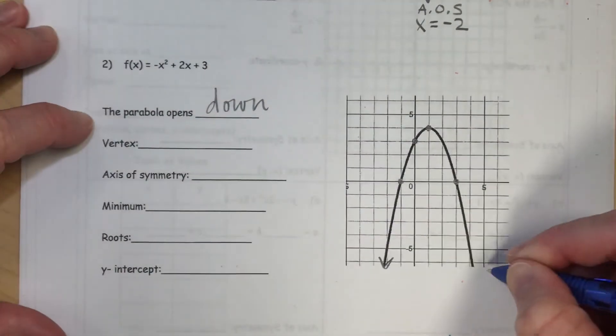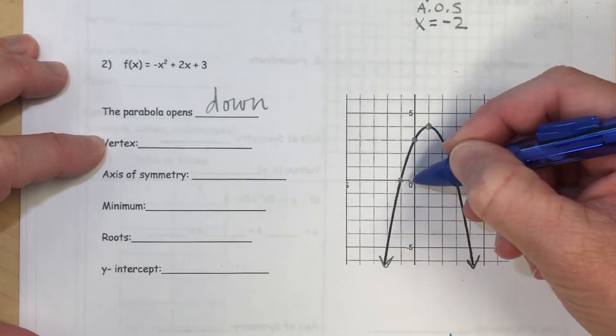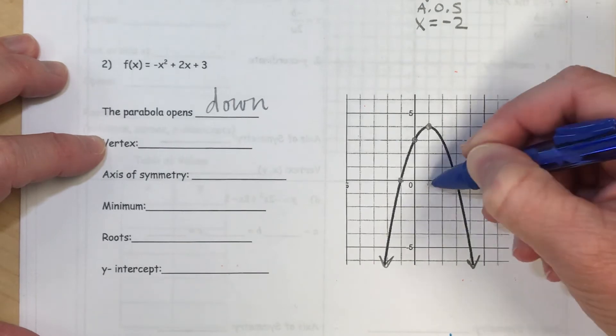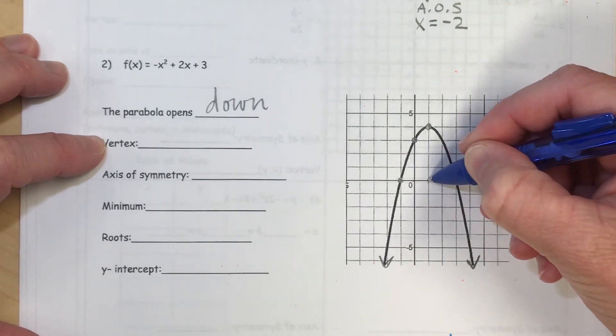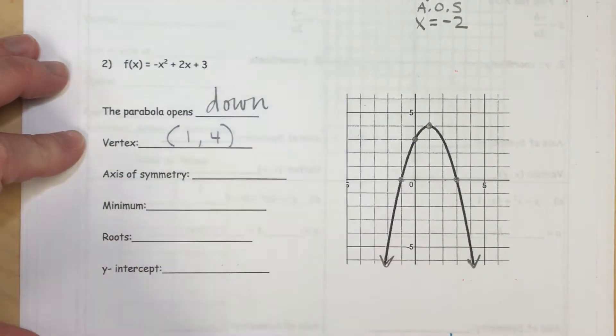Now, the vertex is the highest point, and it looks like our graph goes by 1, 2, 3, 4, 5. So from the origin, it goes right 1, up 4. So right 1, up 4 is our point.